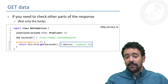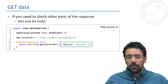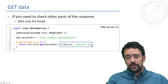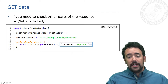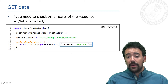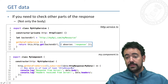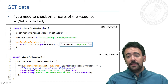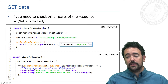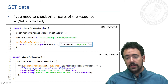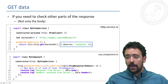If we need to check not only the body of the response but other parts like headers, we need to include the parameter observe: 'response' in the GET method. Thanks to this parameter, the response we receive will be different — we will get an object of type HttpResponse, where we can access the body or the headers. You can check the full documentation of this HttpResponse data type in the Angular documentation.